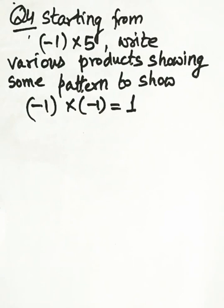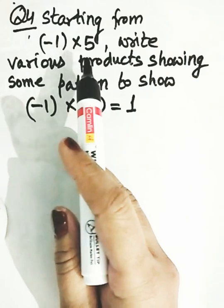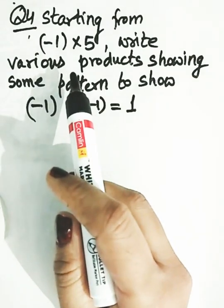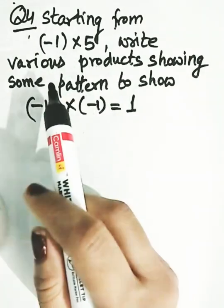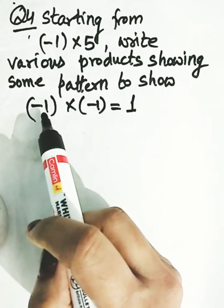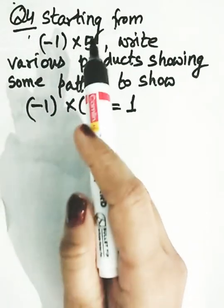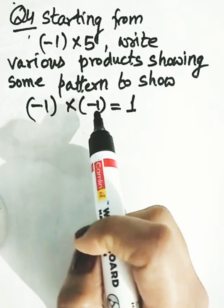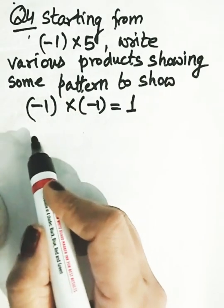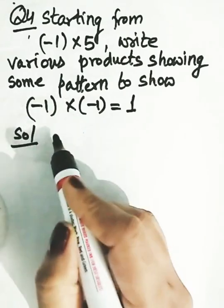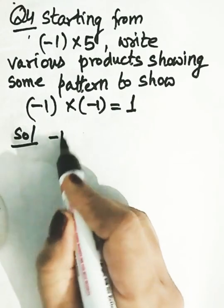Let us discuss question number 4. It says: starting from minus 1 into 5, write various products to show a pattern, and finally reach minus 1 into minus 1, which gives 1. So we can see that minus 1 remains the same throughout; what changes is the second integer, which decreases from 5. We will proceed in descending order, i.e., decreasing order of the number.